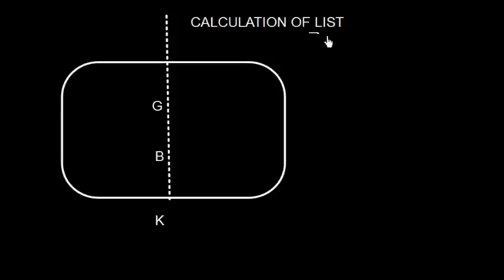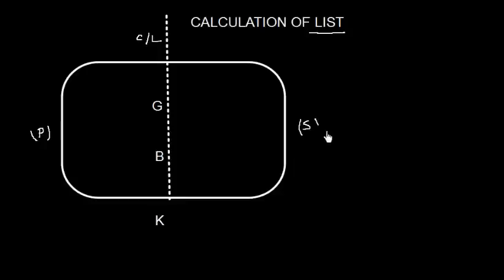How to calculate the list? The center of gravity is at the center line. We are looking at the ship in the transverse direction — that means in port and starboard direction. If we look at the ship from aft, this side will be my starboard side and this side will be my port side.